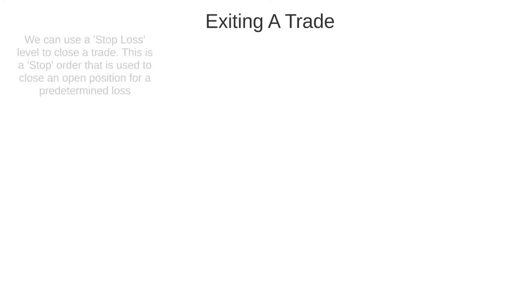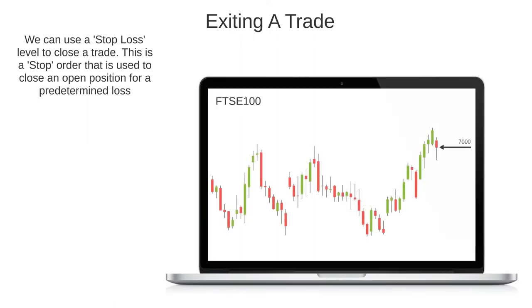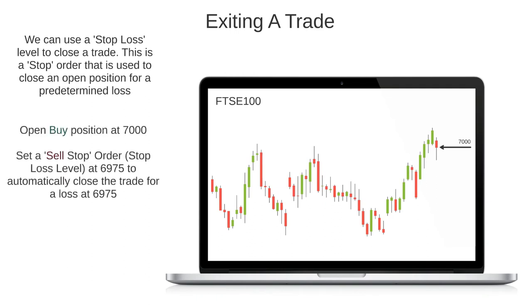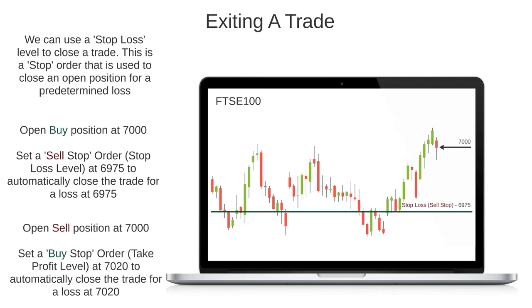The last way we can close a trade is by using what is known as a stop loss level. This is simply a stop order that is used to close an existing position once it has reached a predefined level for a loss. For example, if I entered a buy position on the FTSE 100 at 7,000, I may feel that if the price falls to 6,975 the trade will have failed, so I can set a stop loss order at 6,975. The same can be done for a sell position — if I enter a sell at 7,000 and decide the trade will be incorrect if the price reaches 7,020, I can set a stop loss order there. This order enables traders to quantify and manage their risk. Stop loss orders and take profit orders can be used at the same time on any trade.